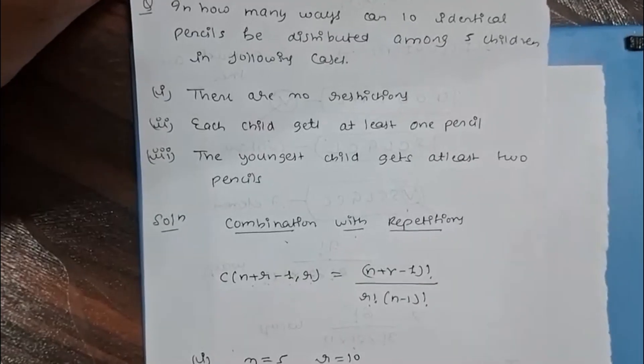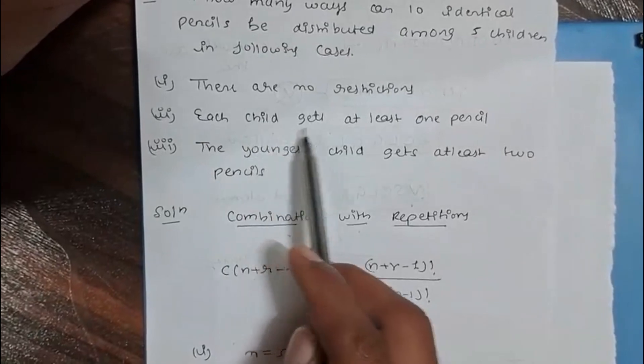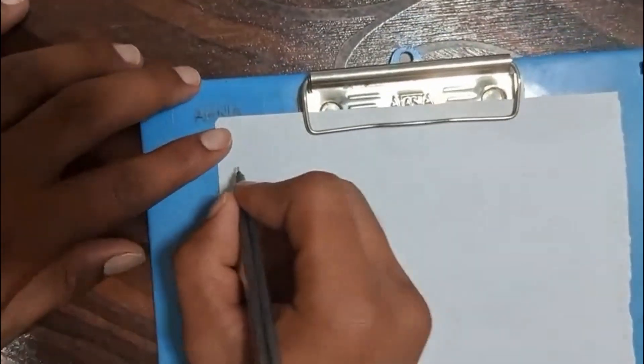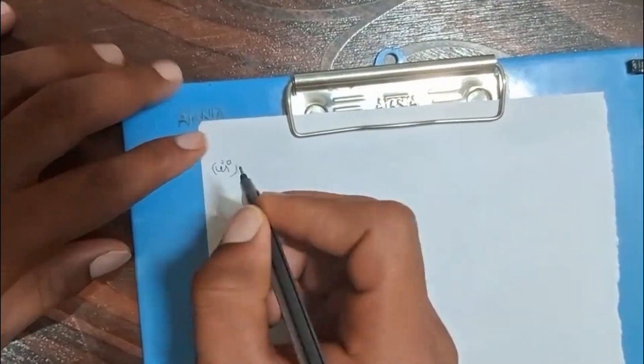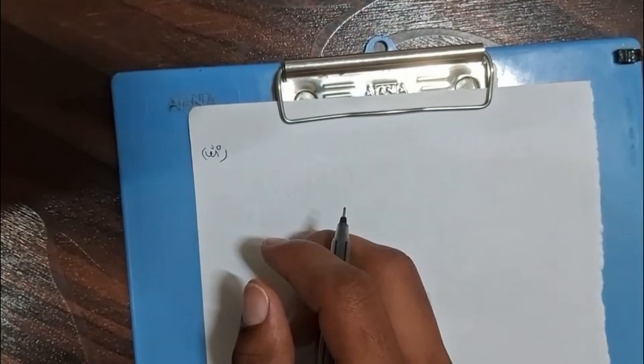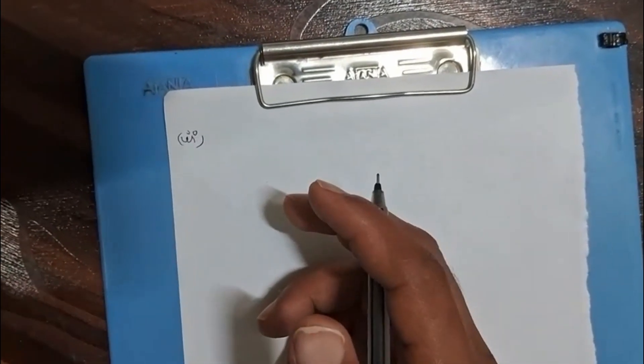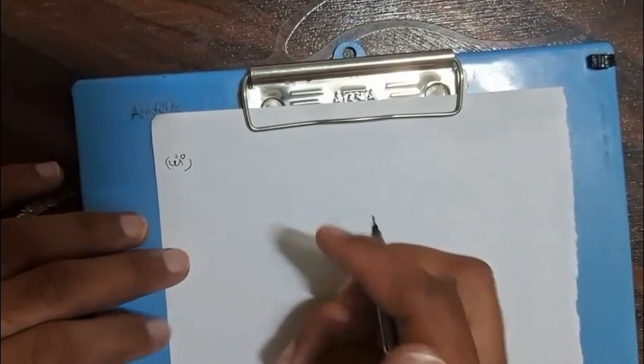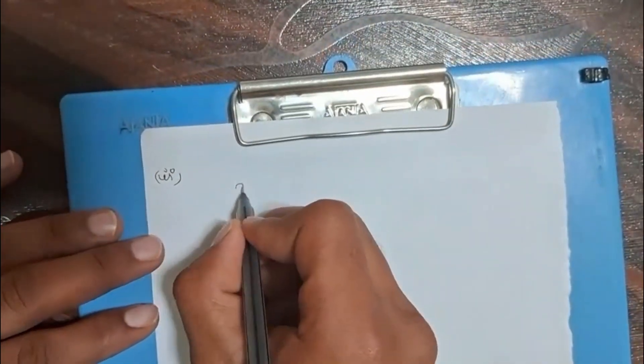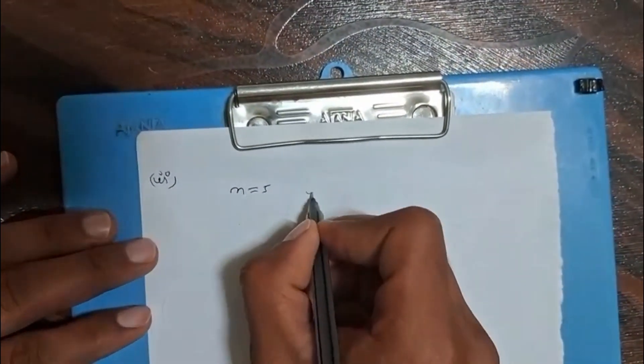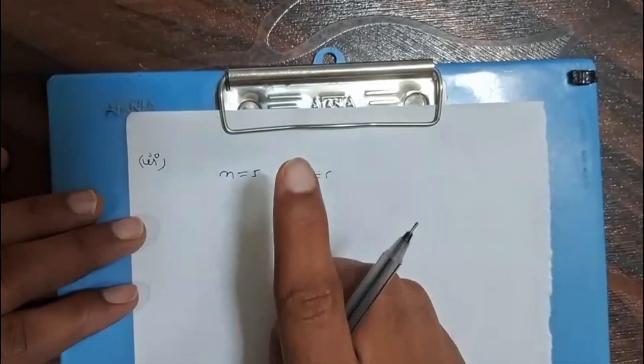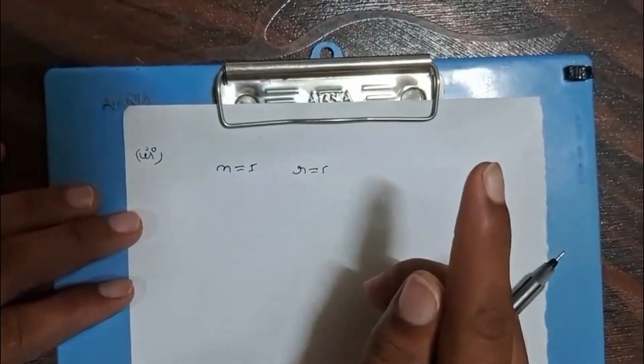Now we go to the second part. In the second part, each child gets at least one pencil. So first we distribute one pencil to each child, then the remaining five pencils need to be distributed. The number of ways of distributing five pencils to the five children is required. Here n = 5 and r = 5 because five pencils are distributed, one pencil given to each, and the remaining five pencils go to the five students.